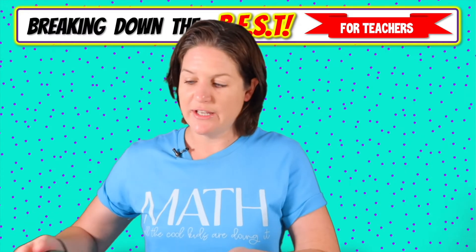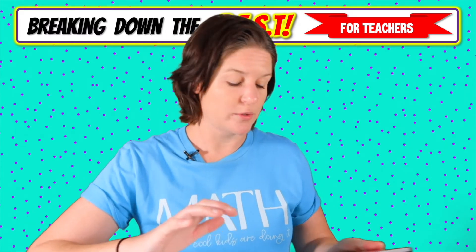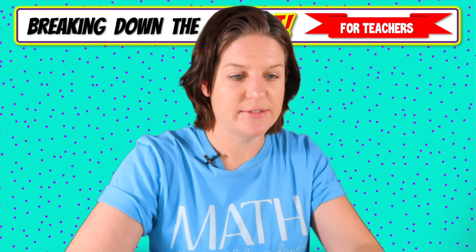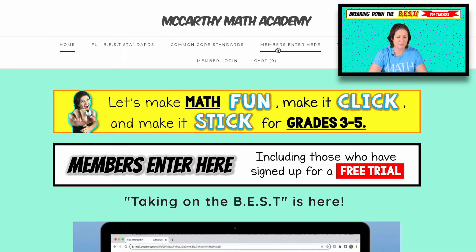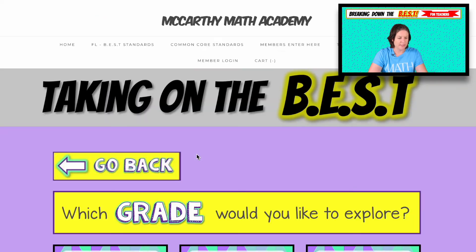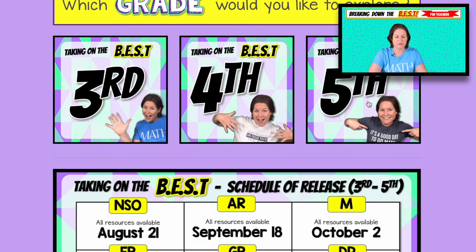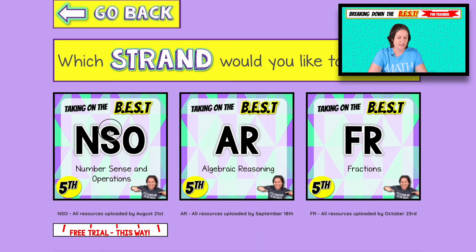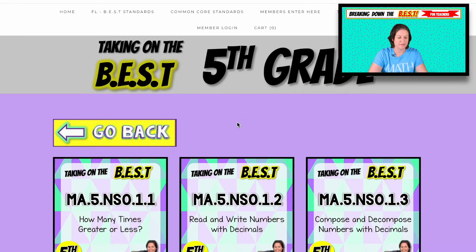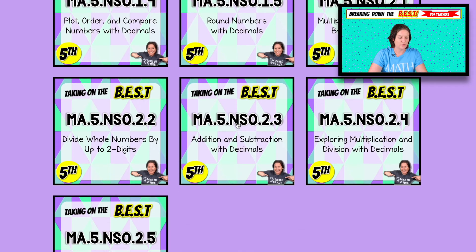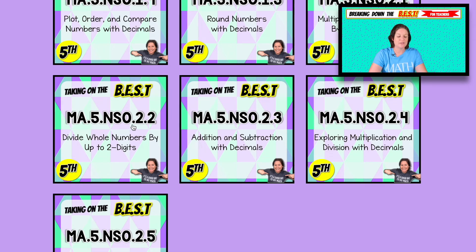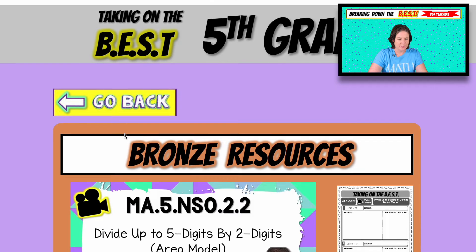All right. Let's take a look at what you have access to with your resources and taking on the best. So you can either enter right here at the members enter here tab or at the white box, click on taking on the best, which grade, fifth grade, which standard, NSO, sorry, which strand, NSO. And then we're going to MA.5.NSO.2.2.